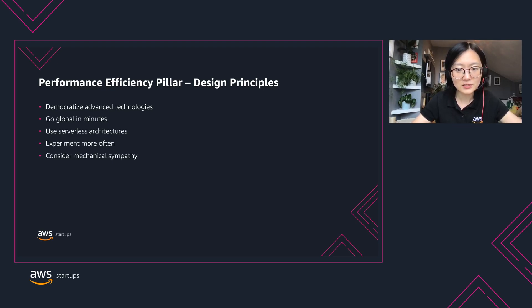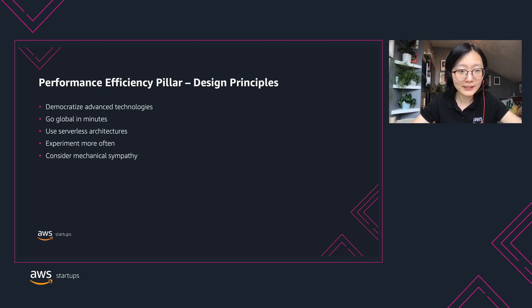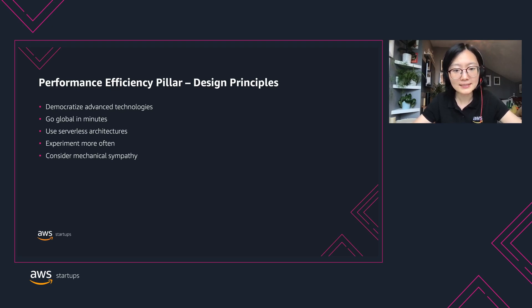Use serverless architecture to remove the need for you to run and maintain physical servers. Experiment more often — when you design your architecture with virtual infrastructure and automated processes, you can carry out comparative testing with different types of instances, storage, or configurations quickly. Consider mechanical sympathy, meaning try to use the technology approach that aligns best with your workload goals. For example, consider your data access patterns when you select a storage or database approach.